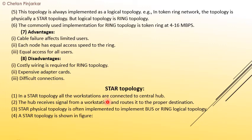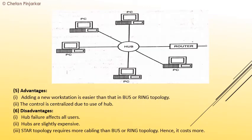Next is star topology. In a star topology, all workstations are connected to a central hub. The hub receives signals from the workstations and routes them to the proper destination. A star physical topology is often used alongside bus and ring topologies.